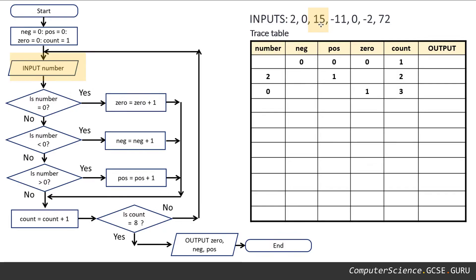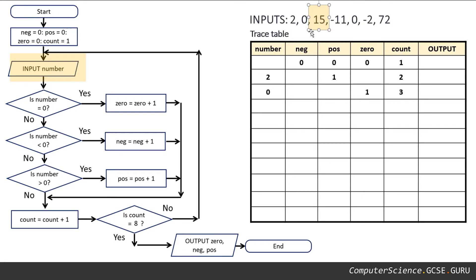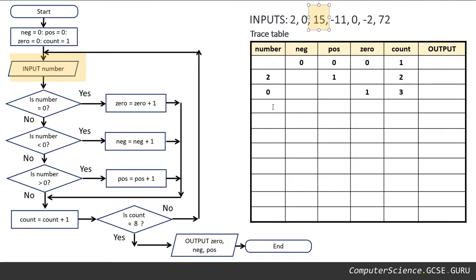We move along. Our next input given to us is 15. So we're going to store the number 15 in the number variable. Record it down — that's the whole point of the trace table, so we can track what happens as we go along.